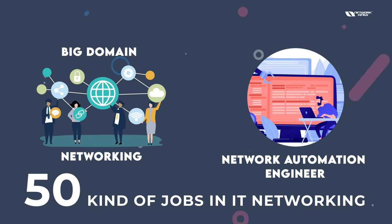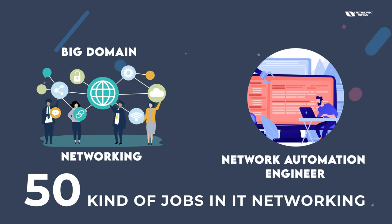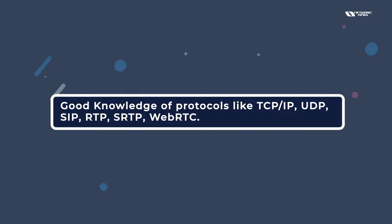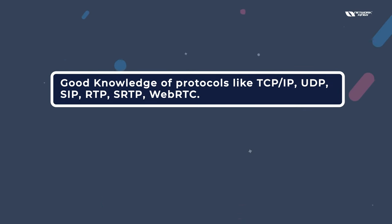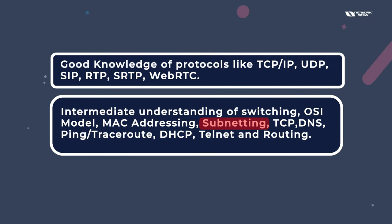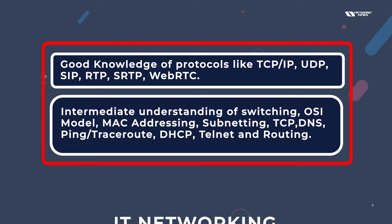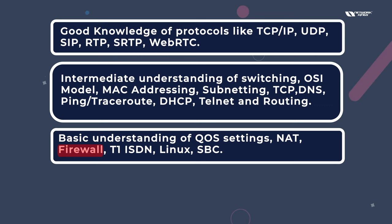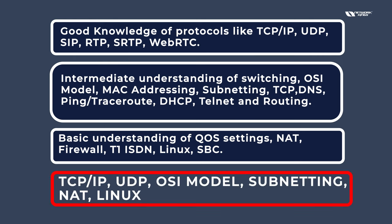In IT networking there are a lot of roles, like network automation engineer. If you want to get a job in IT networking as a fresher or switch your job, you should have good knowledge on topics like TCP, UDP, OSI model, MAC address, subnetting, DNS, ping, traceroute, DHCP, Telnet, and also some knowledge of firewalls, Linux, and quality of service.